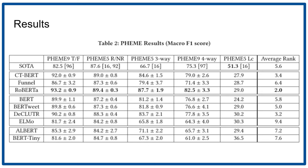For example, in PHEME9 T/F, we're getting about 10 percentage points better with RoBERTa. And then in PHEME5 three-way, we get about 20 percentage points better. On the other hand, with the event-based split PHEME5-LC, the state-of-the-art model is significantly better — about 20 percentage points better than most of the language models.